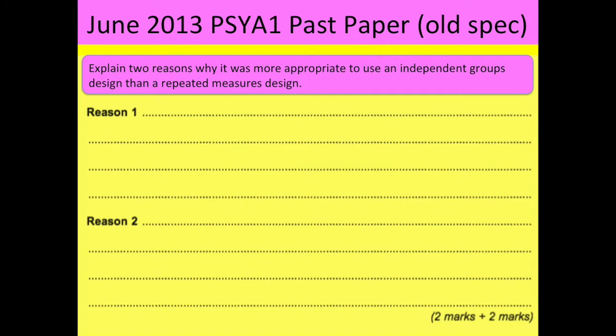So the question is: explain two reasons why it was more appropriate to use an independent groups design than a repeated measures design.